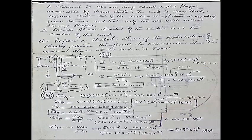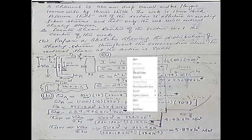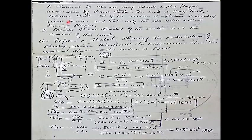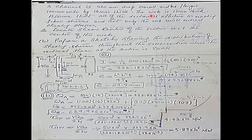The channel is 460 millimeters deep overall. The flanges are 100 millimeters wide with a thickness of 16 millimeters. The web is 12 millimeters thick, as shown in the picture.